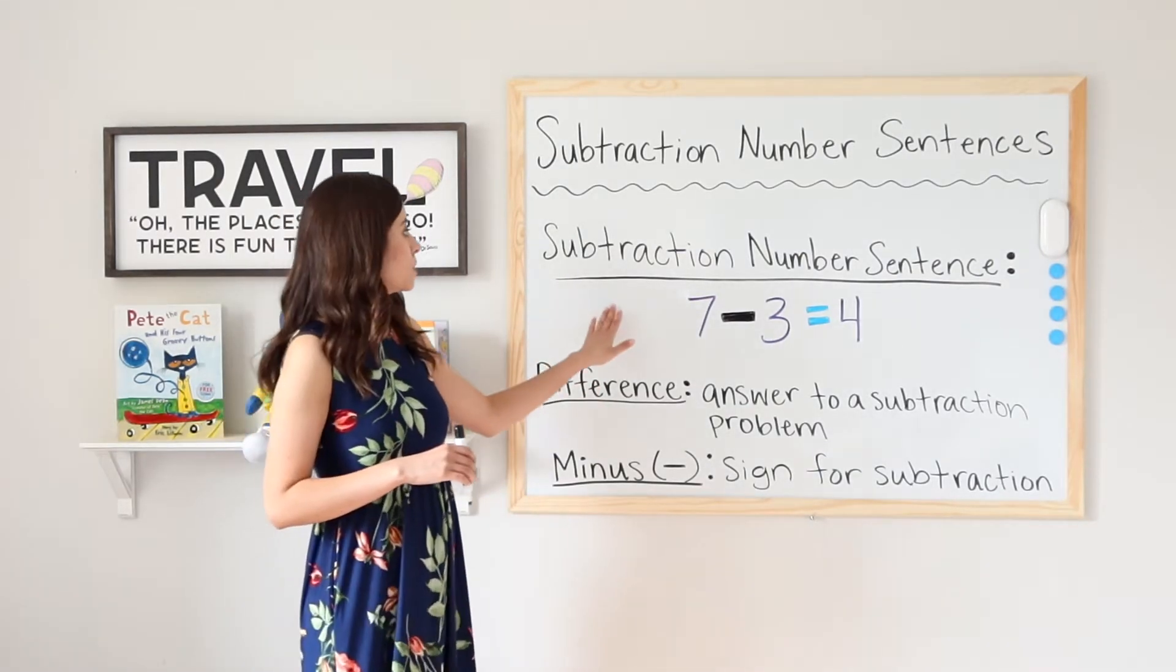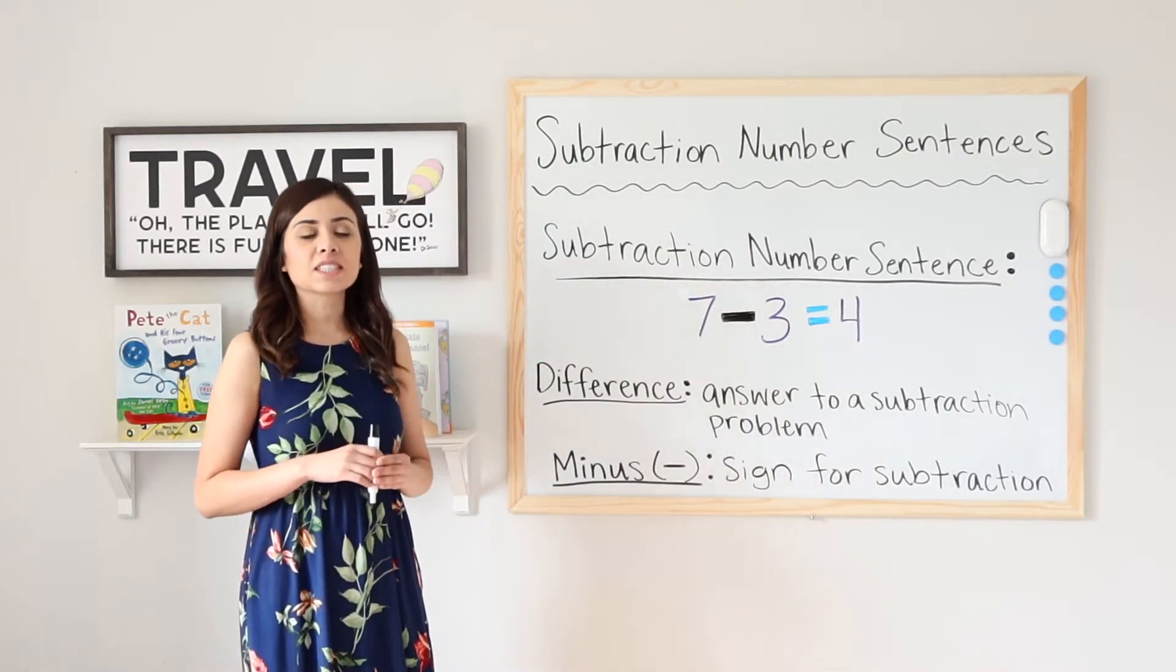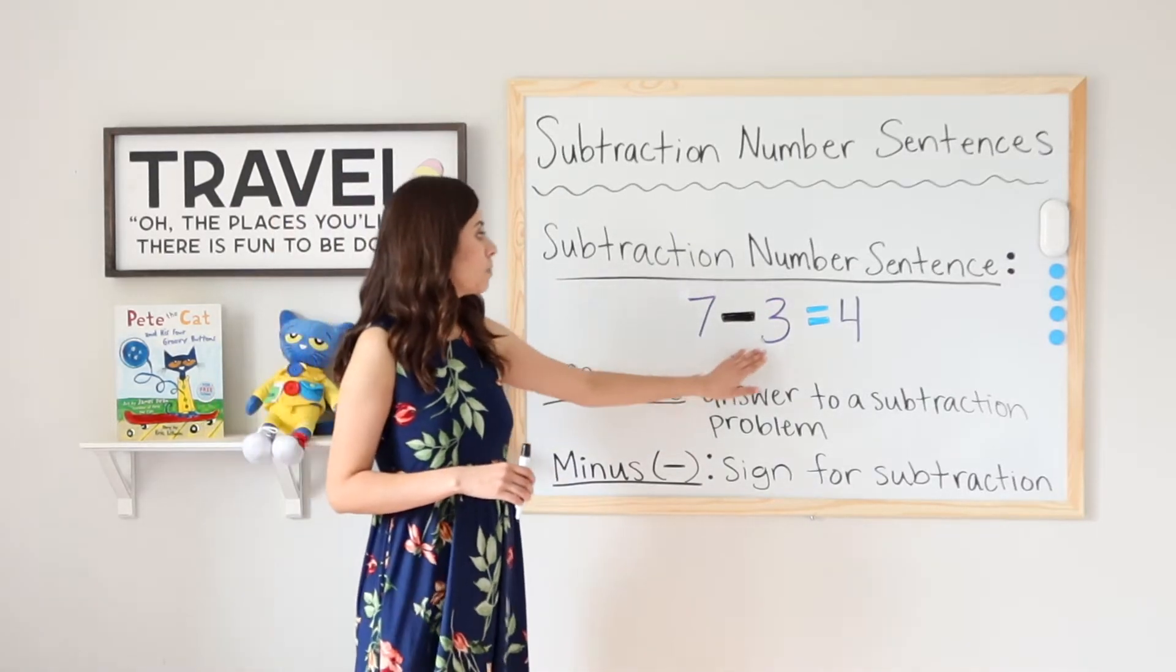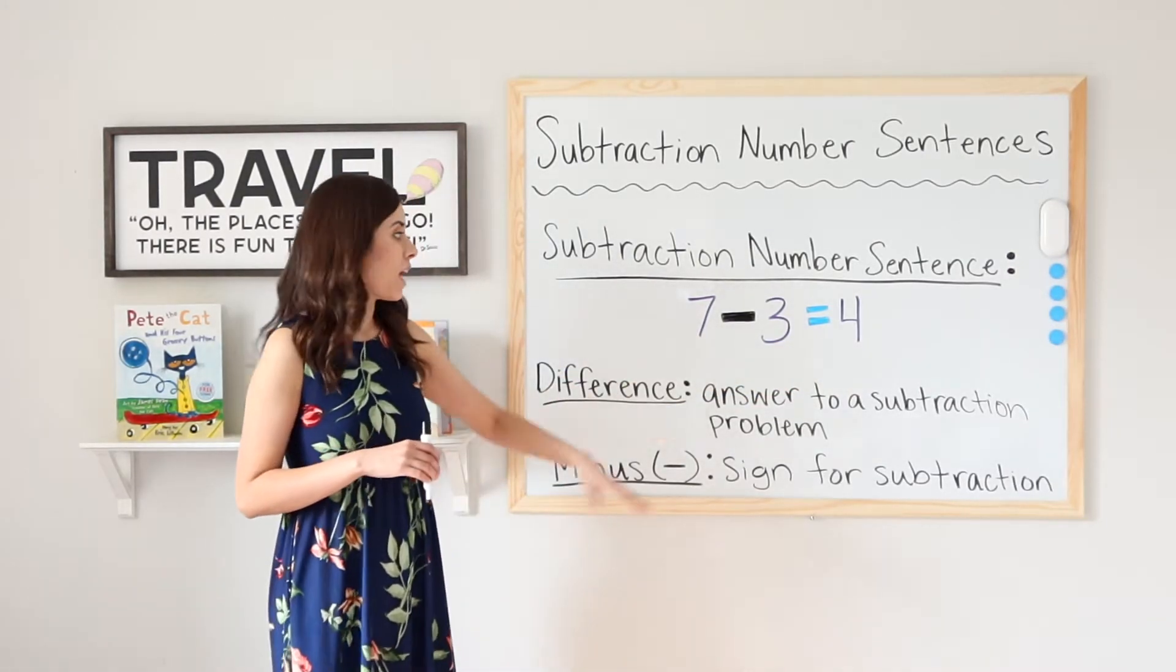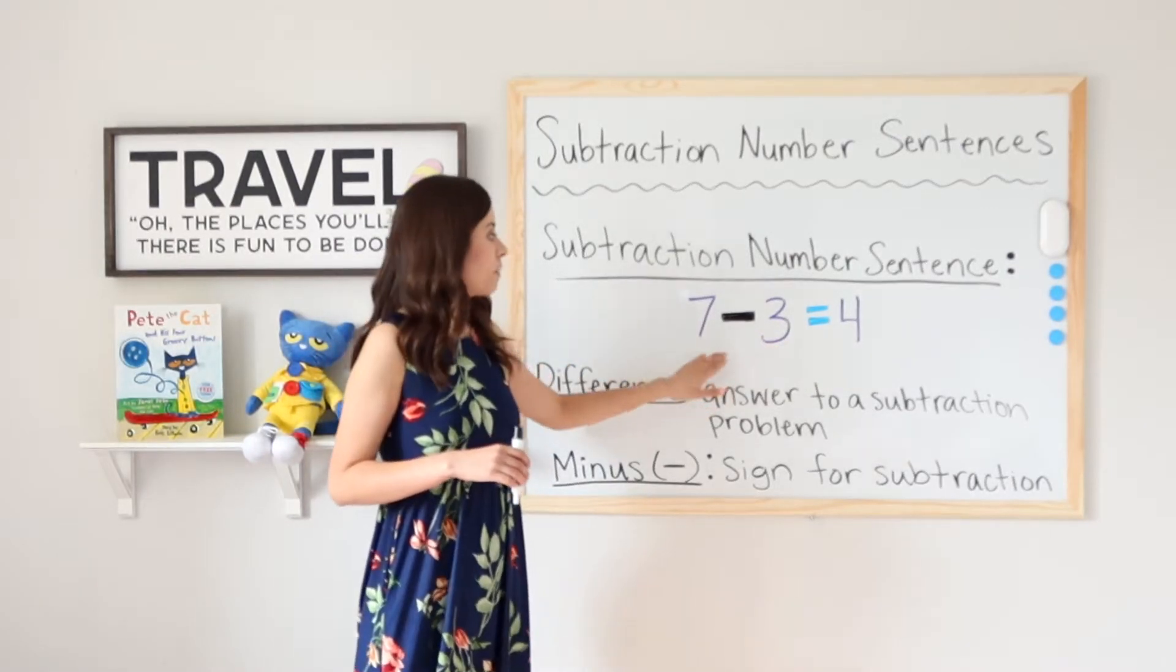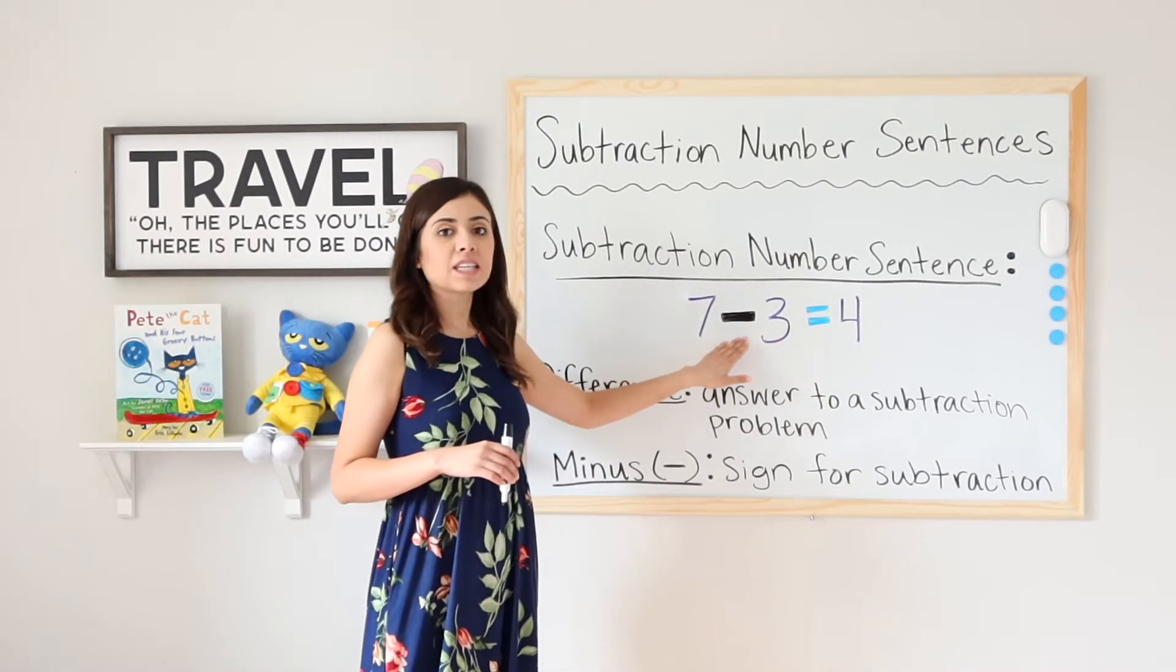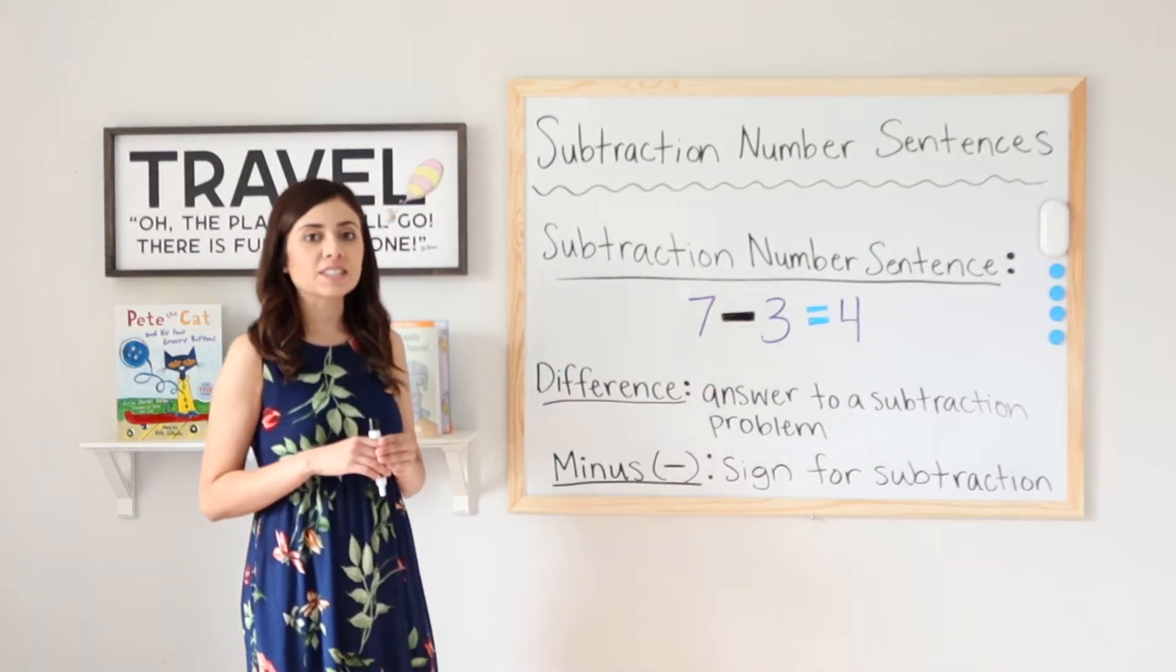So the first one is subtraction number sentence. A subtraction number sentence is an expression that uses numbers, a minus sign, and an equal sign. Here I have 7 minus 3 equals 4. I have my numbers, my minus sign, and my equal sign. Therefore that is a subtraction number sentence.